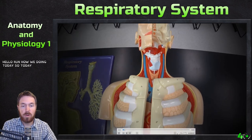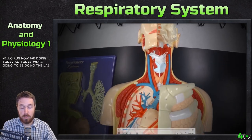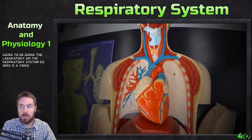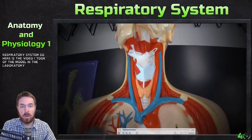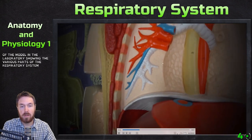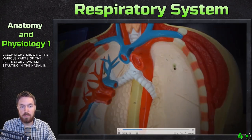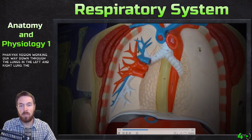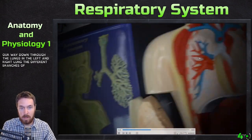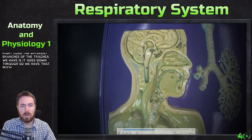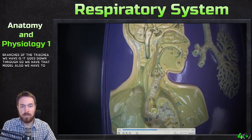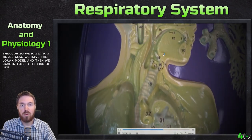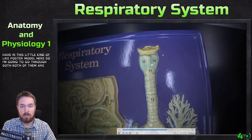Hello everyone, today we're going to be doing the laboratory on the respiratory system. Here is the video I took of the model in the laboratory showing the various parts of the respiratory system. We're going to be starting in the nasal and pharynx region, working our way down through the lungs, the left and right lung, and the different branches of the trachea. We have the thorax model and also a poster model, both are 3D representations.